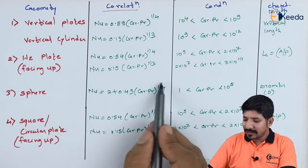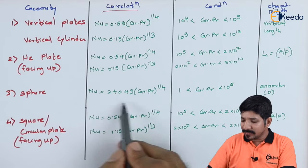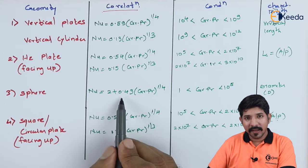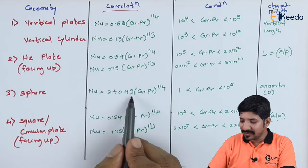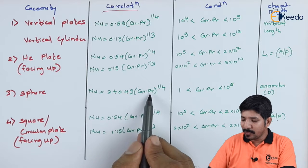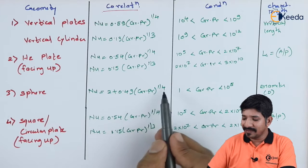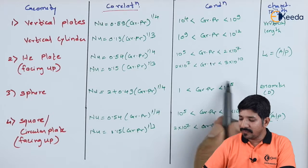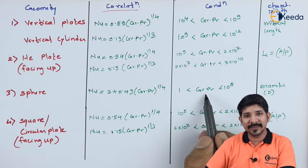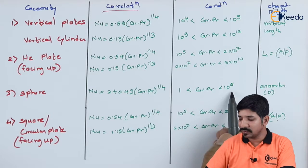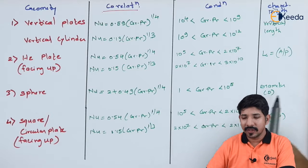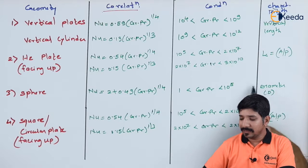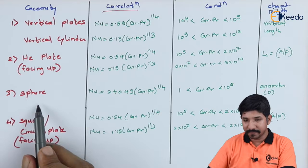For the sphere, the relationship is given as Nusselt number equals 2 plus 0.43 times (Gr · Pr) raised to 1/4, where (Gr · Pr) is the Rayleigh's number. This is only applicable when the Rayleigh's number stays between 1 and 10^5. The characteristic length in this case is the diameter D of the sphere.